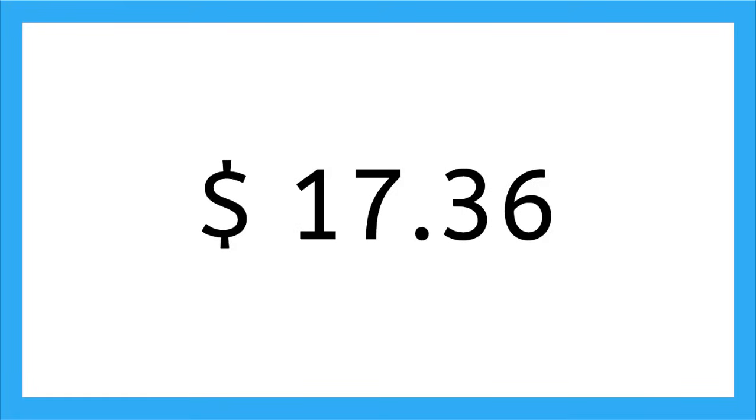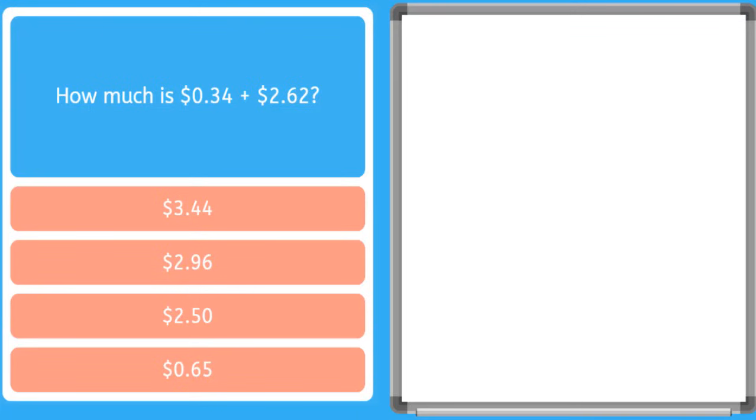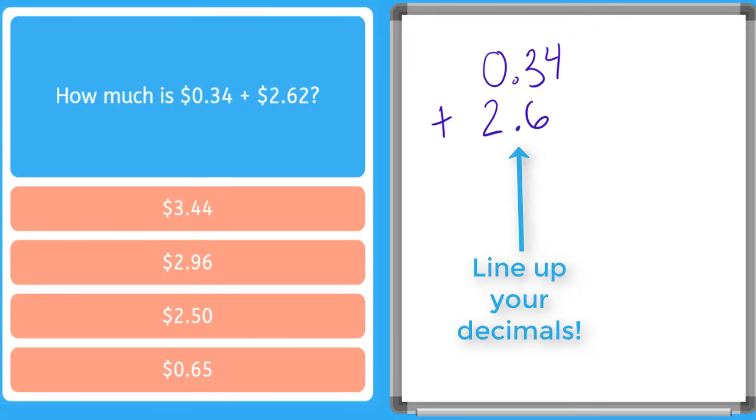Let's do some examples of adding and subtracting money together. So here our problem says, how much is 34 cents plus $2.62? So we have $0.34 plus $2.62. I can add my dollar signs in here.